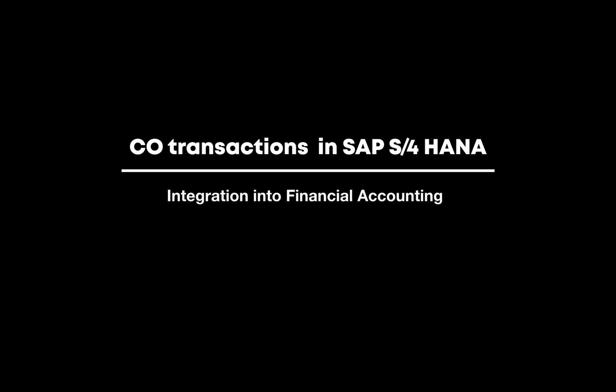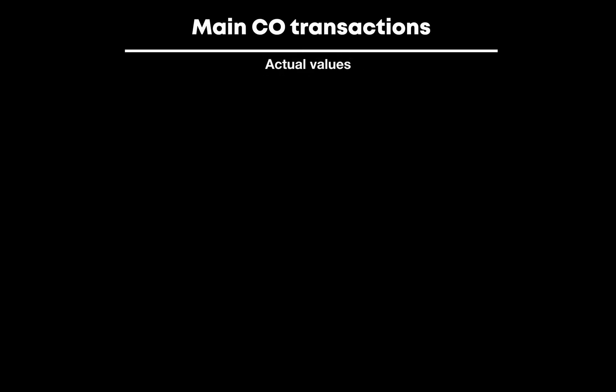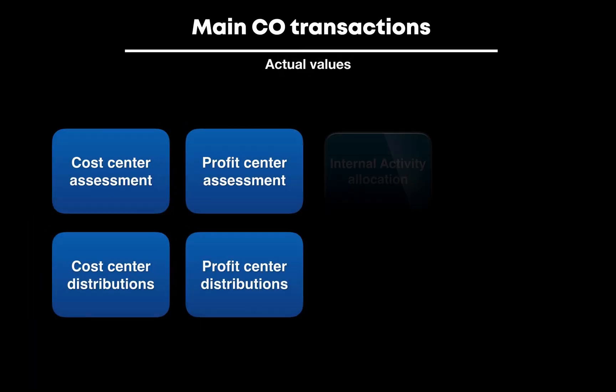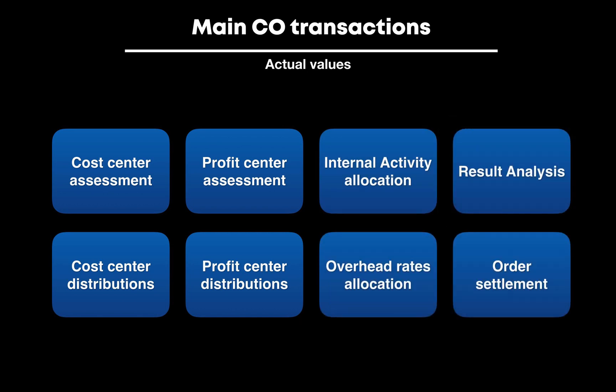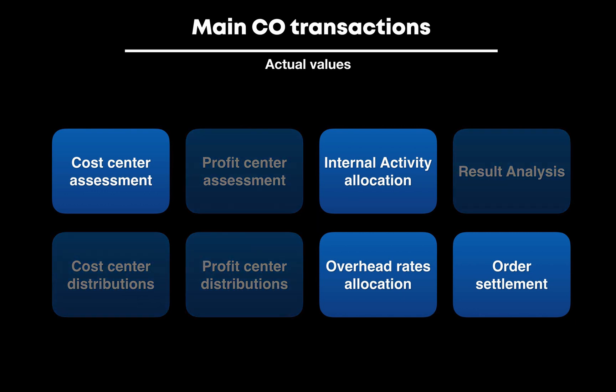Due to the many questions about secondary cost postings and CO documents that reached us, we have decided to dedicate a video to this topic. The focus will be on transactions which were initiated in controlling and on the question of how these transactions are reflected in Financial Accounting and in the Universal Journal in SAP S/4HANA. We will cover cost allocations, internal activity allocations, overhead cost calculation, and order settlement.